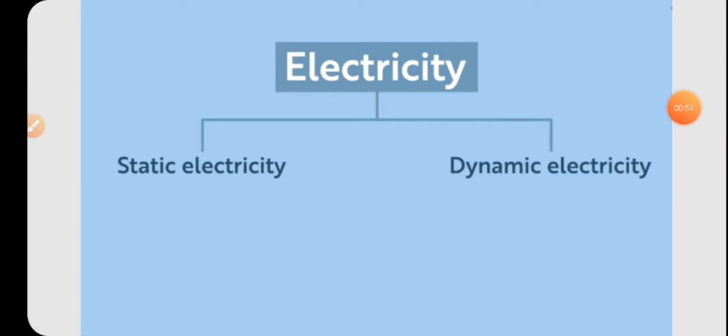So students, electricity is basically of two types. One is static electricity and other is dynamic electricity. When I say static electricity it means the static means which do not move from one place to another. Like static electricity can be generated by friction also. Like in 9th or 8th class you might have studied about the friction.